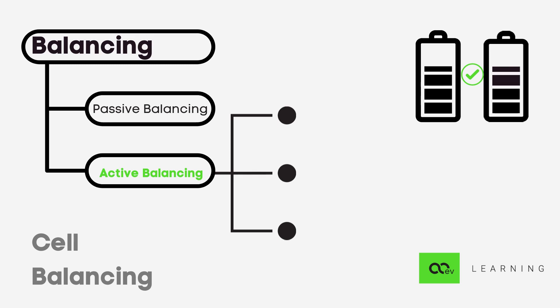There are three methods for active balancing of the battery pack: capacitor-based circuits, transformer-based circuits, and shared bus active balancing method.